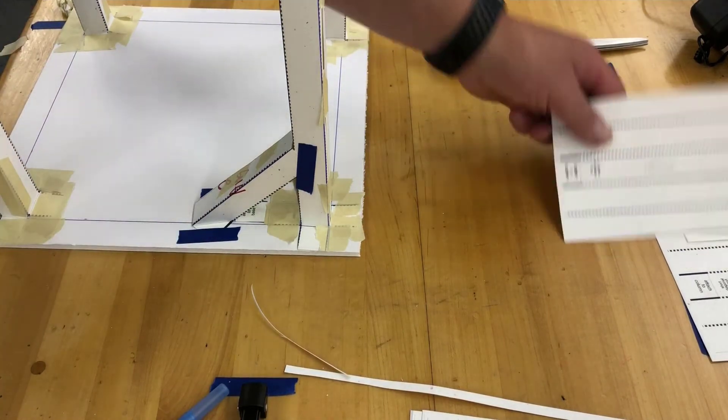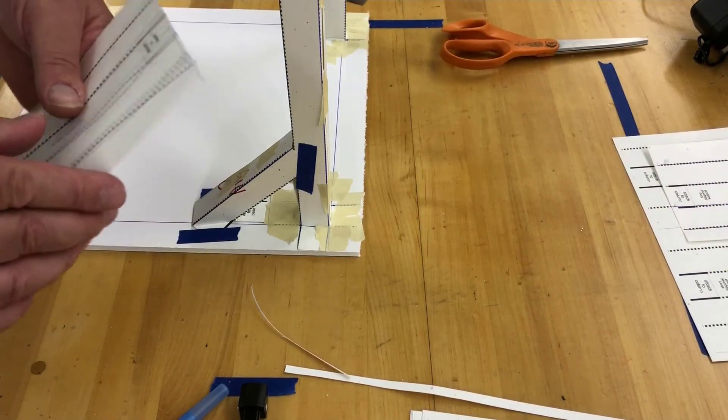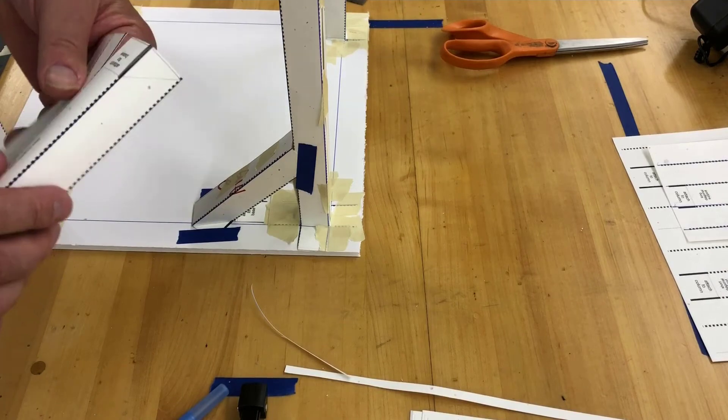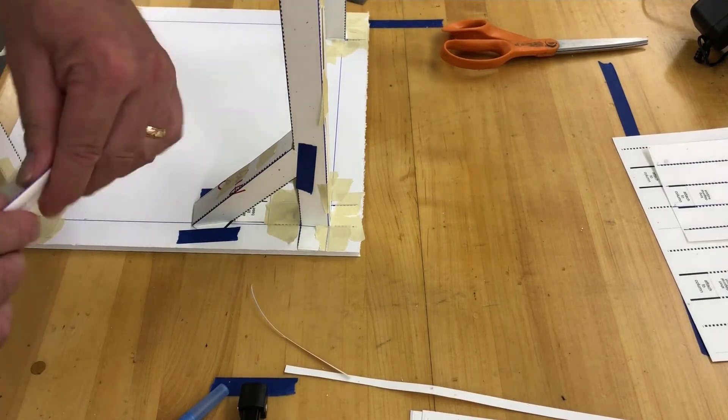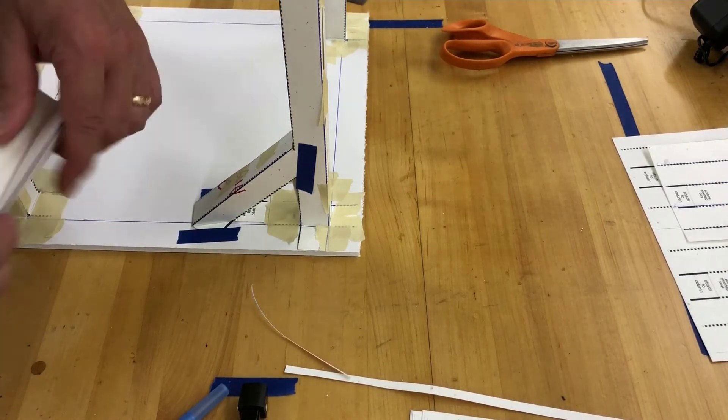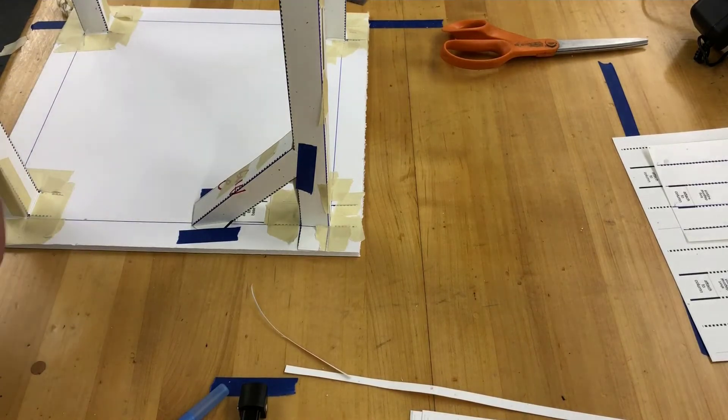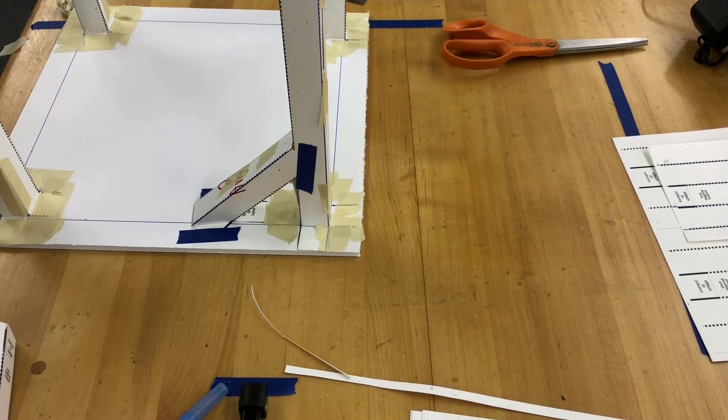The next thing is to take this larger one and we're gonna fold it just like we did the smaller one. And the larger one and the smaller one are gonna work together on one beam.